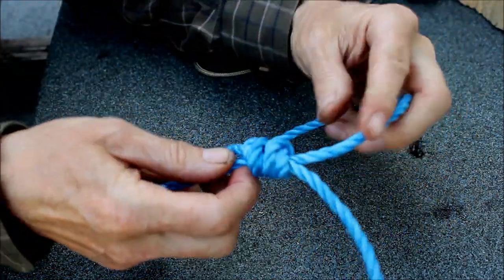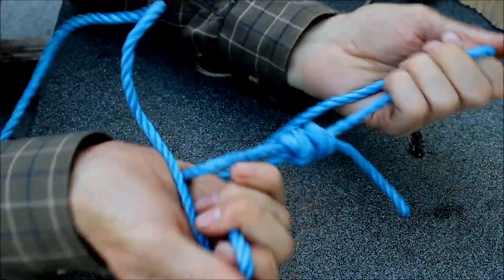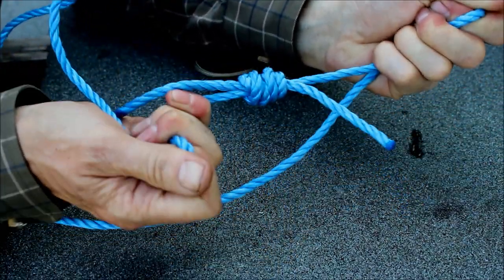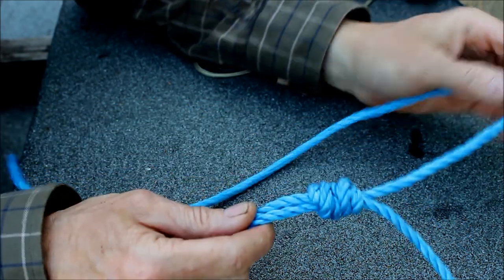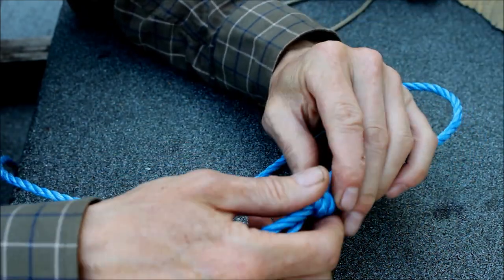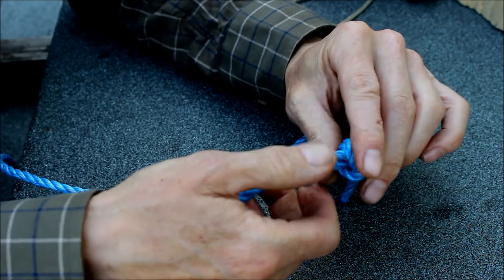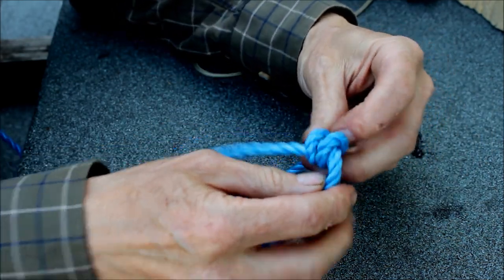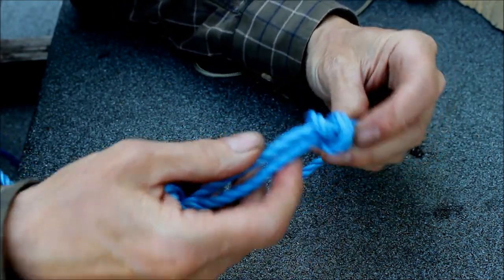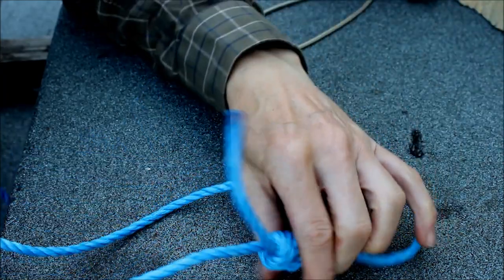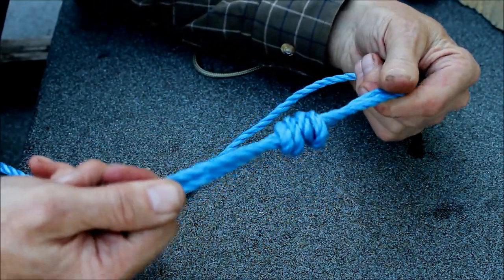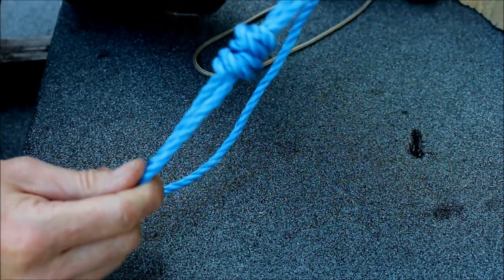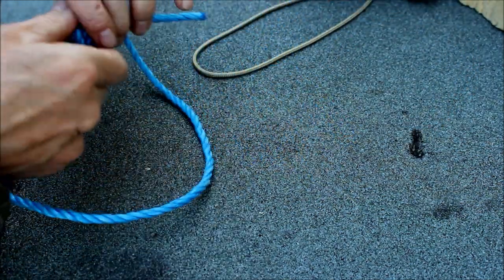That's how you make slings in climbing, for climbing. That's a good secure knot for tying two ropes together, far more secure than just the reef knot or the square knot on its own. That's the fisherman's knot.